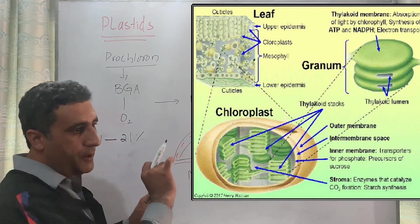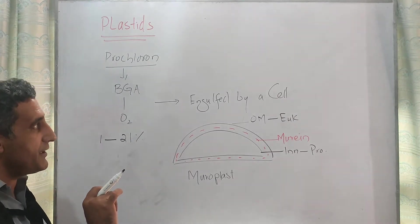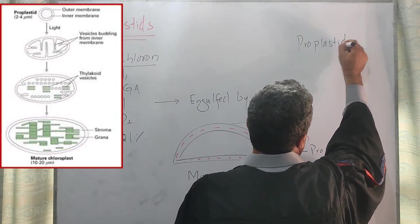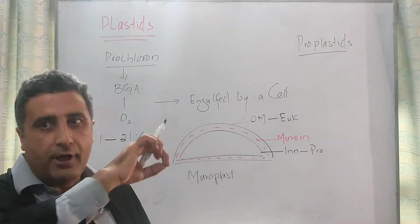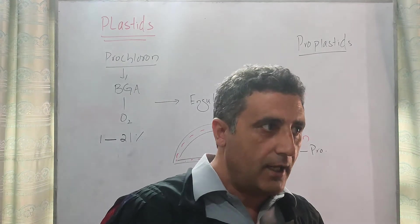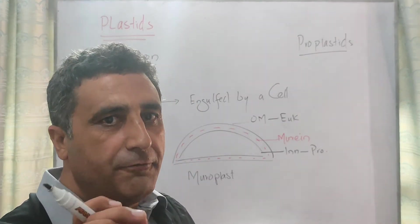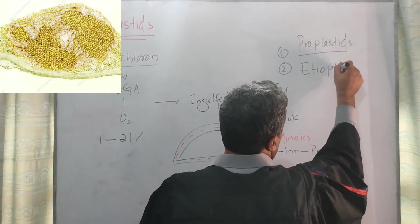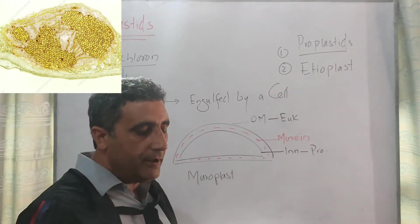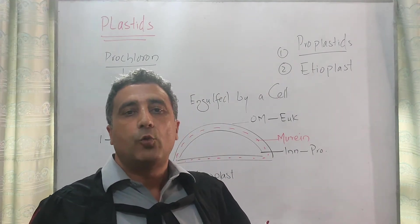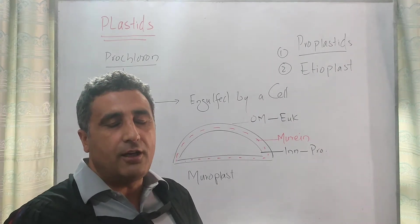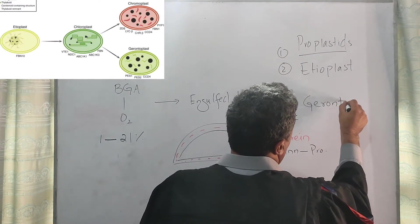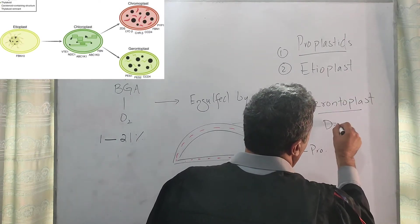The first chloroplast, when it is in an embryonic form, is known as the proplastid. The proplastid is the embryonic form of plastid. When it is grown in the dark, like inside a seed or when it is not a fully developed chloroplast, it is known as etioplast. And when the plant dies, its chloroplast will become gerontoplast. Gerontoplast is our decaying chloroplast.